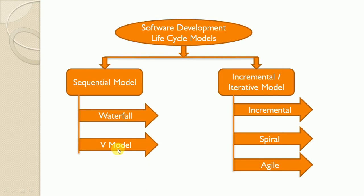V-Model was developed to address some of the problems experienced using the traditional Waterfall Model. In Waterfall, all activities are completed one after another and test activities only occur after all other development activities have been completed, meaning the tester is involved in the project only at the last phase of the development process. V-Model follows the same sequential design process as Waterfall, but V-Model is an extension of Waterfall Model. Unlike Waterfall, V-Model integrates the test process throughout the life cycle.